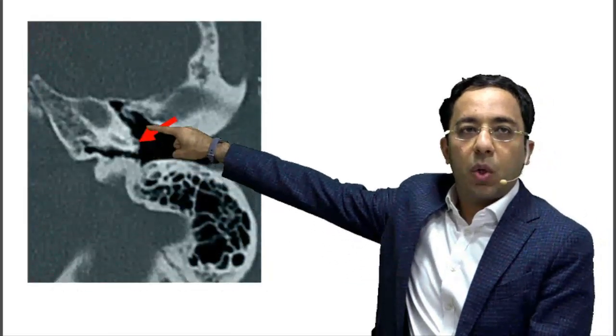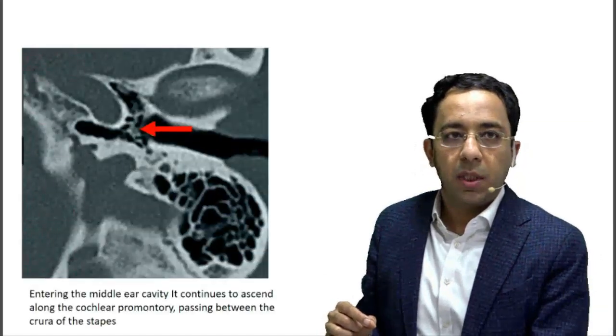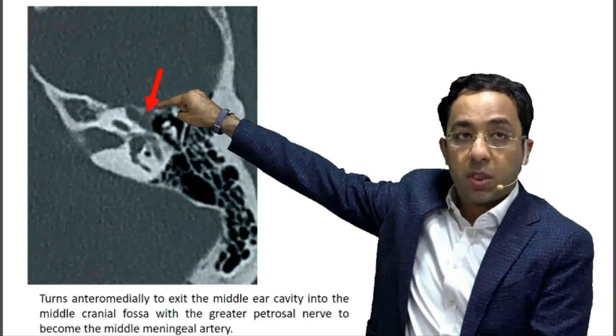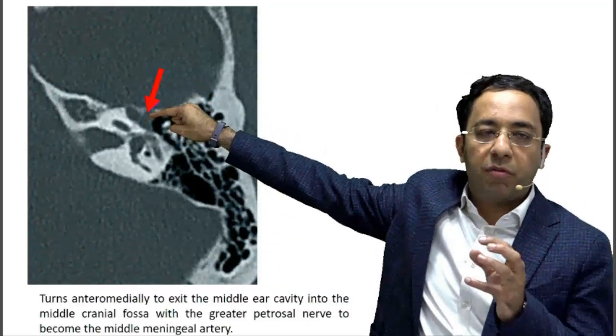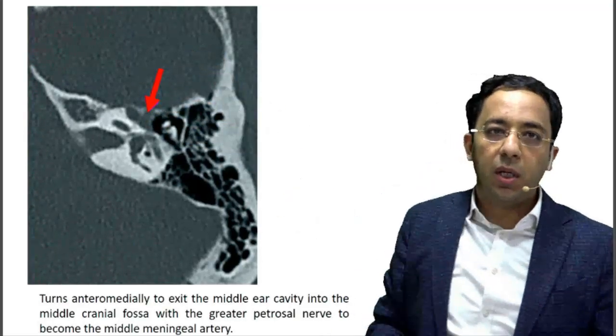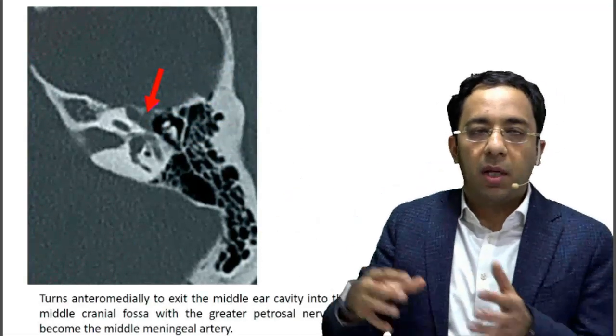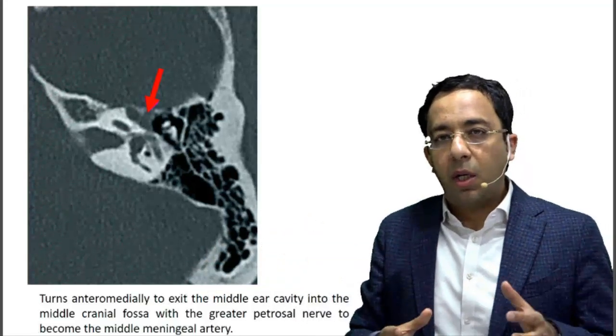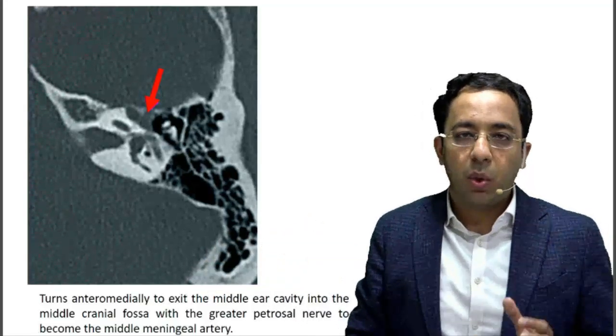As the soft tissue enters the middle ear, it is seen along the cochlear promontory, passing between the two crura of the stapes. Going superiorly, the soft tissue extends and is then seen exiting the middle ear into the middle cranial fossa along the greater petrosal nerve, where it forms the middle meningeal artery.